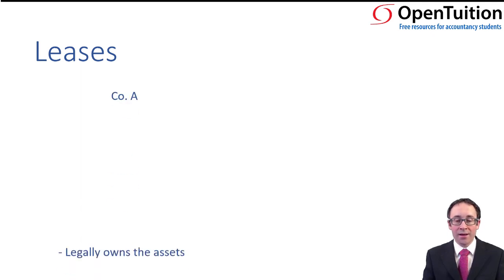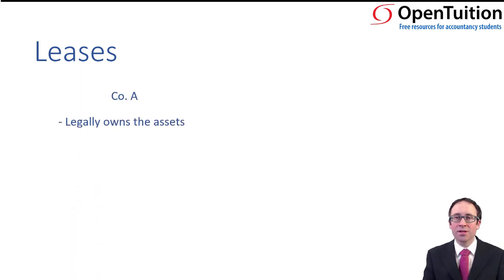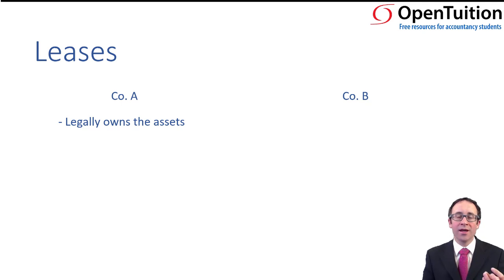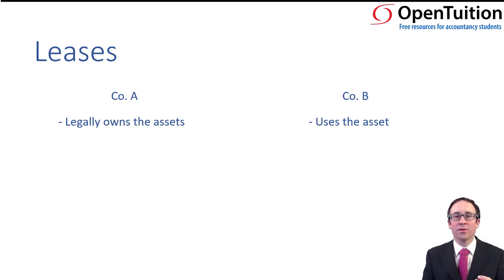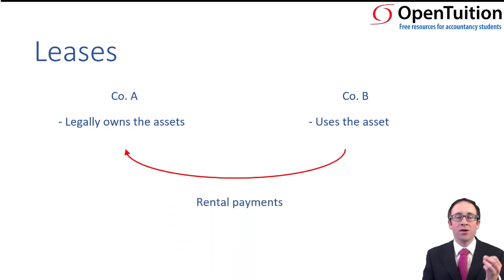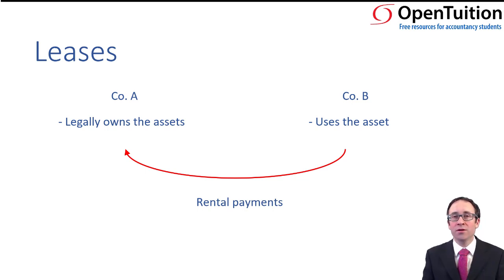We have company A who legally owns the asset — it belongs to them. And you have a company that is looking to use that asset but can't raise debt or equity finance, so it enters into a lease to be able to use that asset. Even though legally company A owns it, company B uses the asset, and it is allowed to use it for a fixed period of time, provided that it makes rental payments to company A.